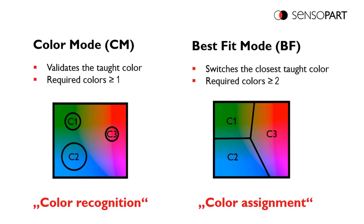In color mode, you teach a color and then set a tolerance. You can see that C1 has a narrow tolerance and C2 has a larger tolerance.